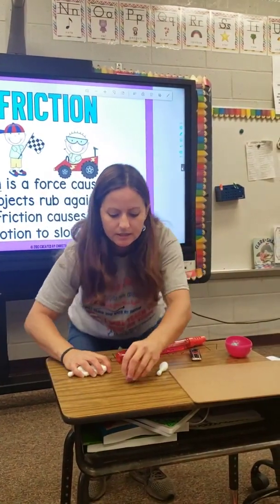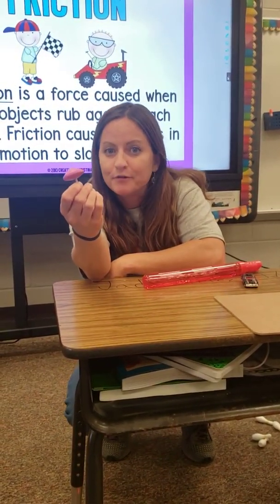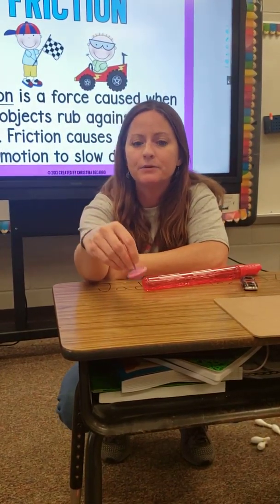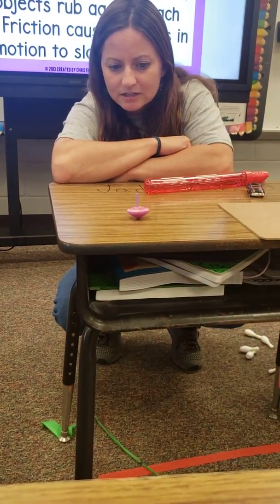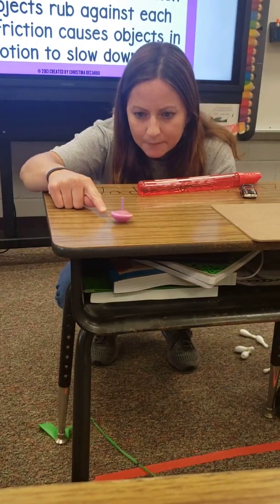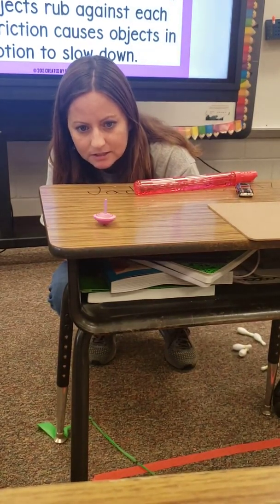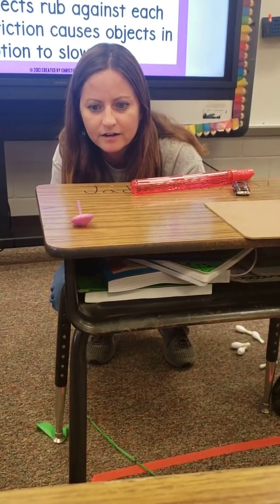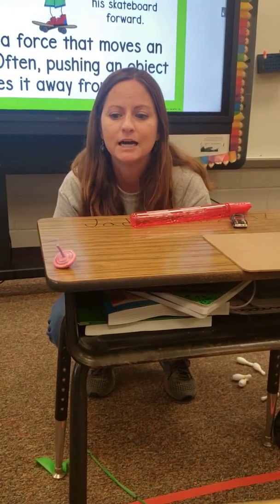So this is a spinning top. Who thinks that when I spin this top, it will just spin forever and ever? You're right, it isn't going to spin forever and ever. It's going to stop. It's starting to slow down because of the friction from the bottom of that top on the desk. It's starting to wobble, getting slower. And there it goes. Friction caused our spinning top to stop.